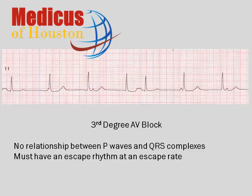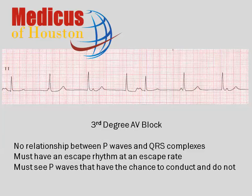The third requirement for diagnosing third-degree AV block is that you need to see P waves in areas of diastole where there's no reason for them not to conduct, yet they still fail to conduct. Non-conducting P waves located in places where one wouldn't even think that they would begin to conduct, regardless of the underlying rhythm, don't prove anything. We're going to see an example of that in just a moment.